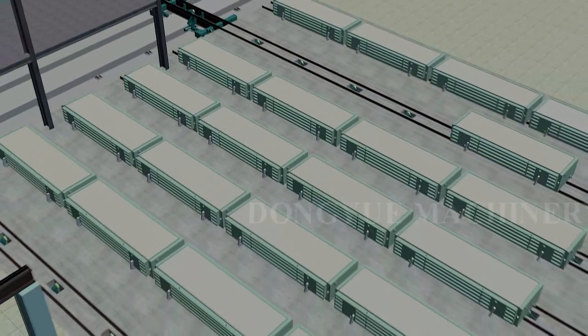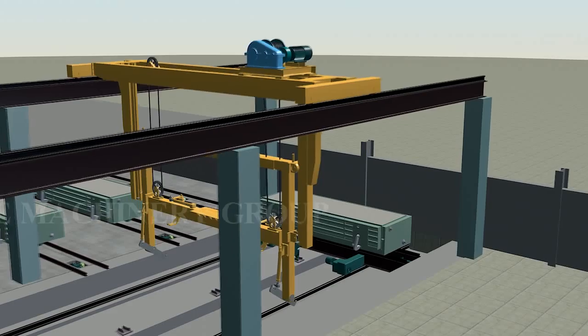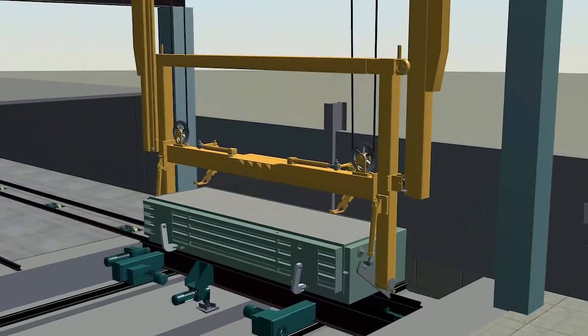Block cake completes the hardening process to achieve the cutting requirements at certain temperature. Mold box is transported to cutting area by reversal crane.